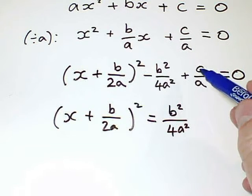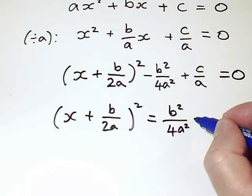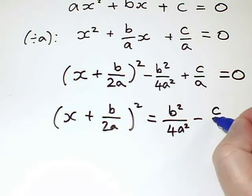And where I've got a plus c over a on this side, I need to subtract that from both sides to make it go away from this side. So I will get a minus c over a here.